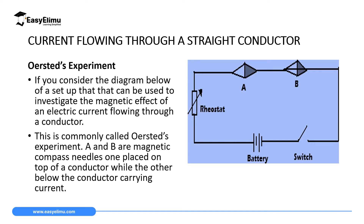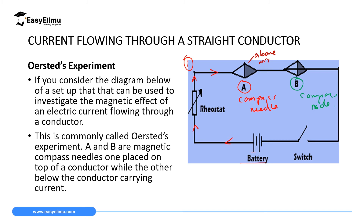So the Hans Oersted experiment is as shown on this screen here. What you do, you just set your experiment like this, where you have a battery which will produce a direct current. Now this current will be moving in this direction, through the rheostat. And then it will meet the compass needle. This is compass needle A — the first one, which is above the wire. Then we have another compass needle B, which is below the wire.